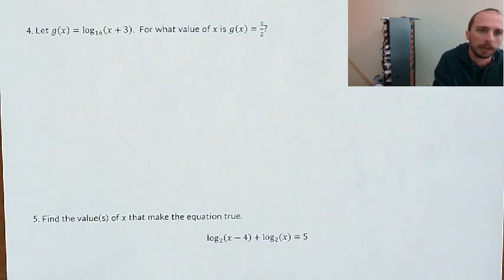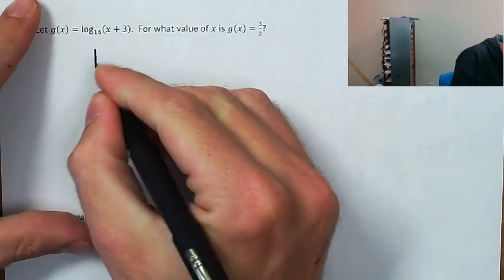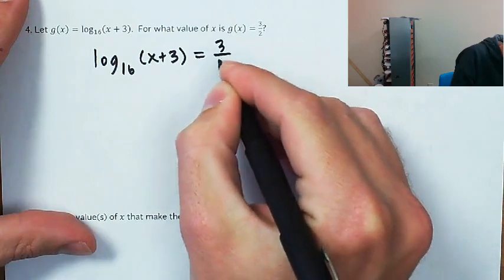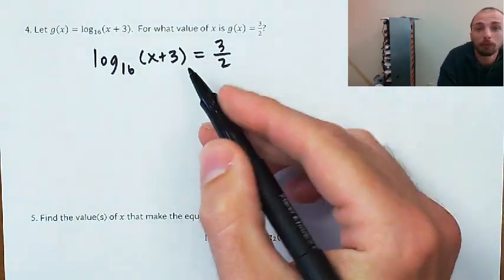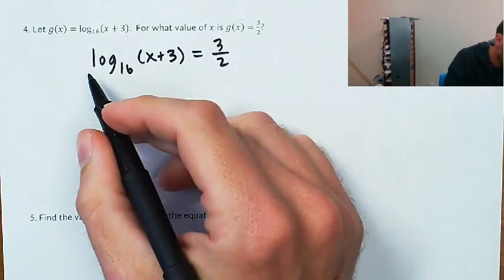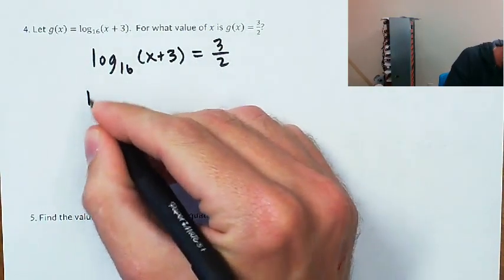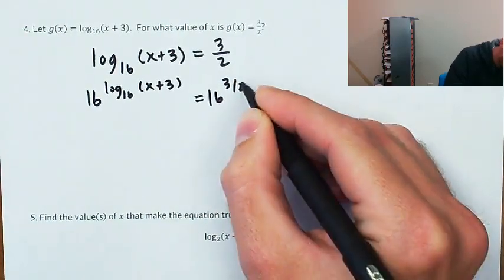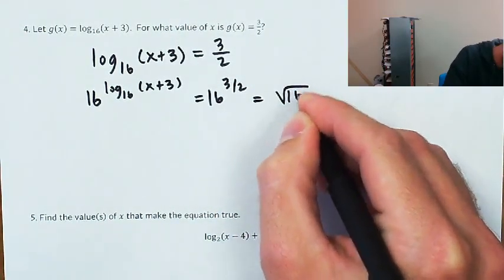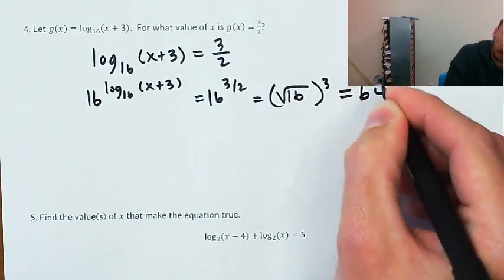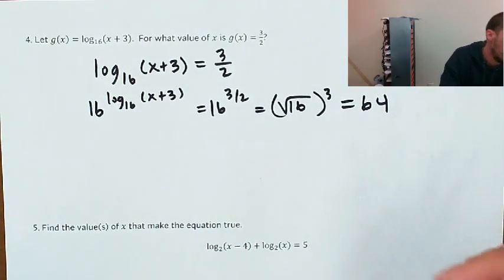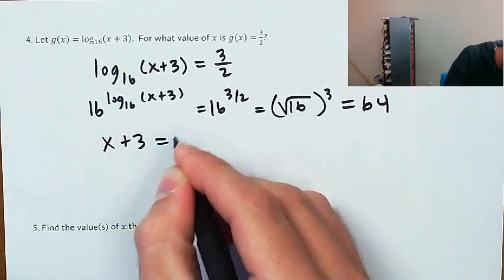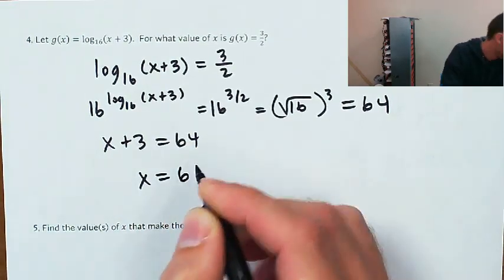On the back: for what value of x is g of x equal to 3 halves? I'm going to set g of x equal to 3 halves. We're going to eventually have to take 16 to the 3 halves power, so I'll take 16 to both sides. 16 to the 3 halves is the square root of 16 cubed — 4 to the 3rd, which is again 64. So x plus 3 equals 64. Subtract 3 from both sides and you get x equals 61.